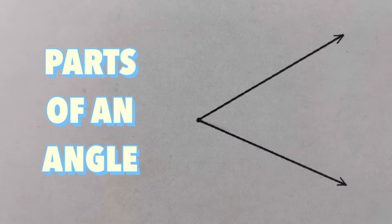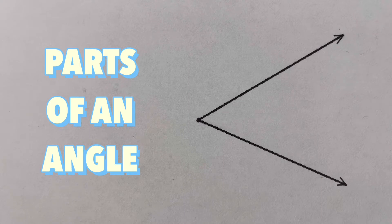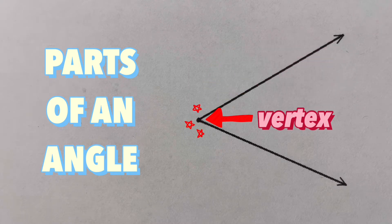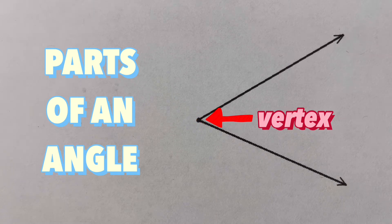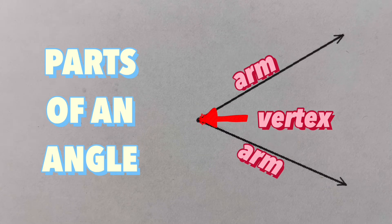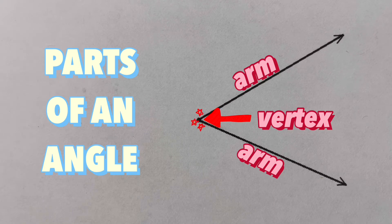Before we go over the steps on how to construct an angle bisector, let's go over the parts of an angle. The point of intersection between the two rays that creates an angle is called the vertex, and the two rays are called the arms of the angle. We're going to use these terms as we go along with the three steps.